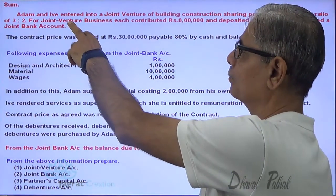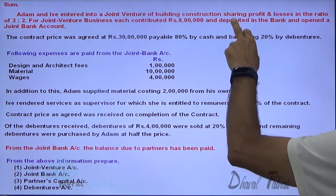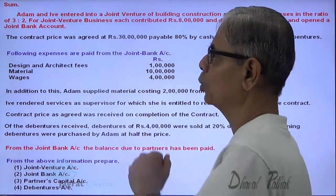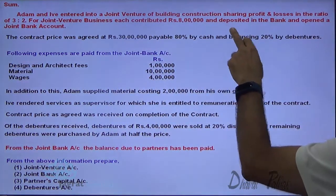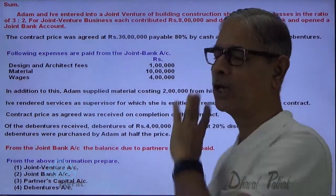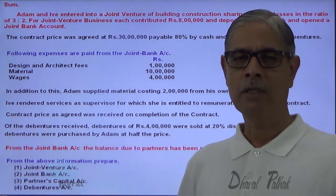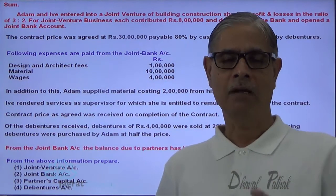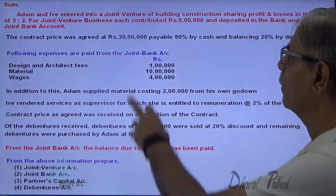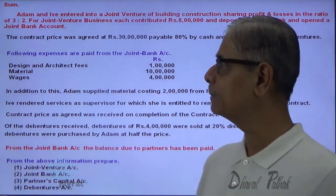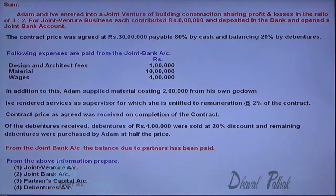Adam and Eve entered into a joint venture for building construction, sharing profits and losses in the ratio of 3 to 2. For joint venture business, each contributed 8 lakhs and deposited in bank and opened a joint bank account. Short-term partnership is identified as joint venture. Two partners, Adam and Eve, have entered into a joint venture transaction to construct a building. Each partner contributed as capital 8 lakhs rupees. Contract price was agreed 30 lakhs, payable 80% by cash and balance 20% by debentures.